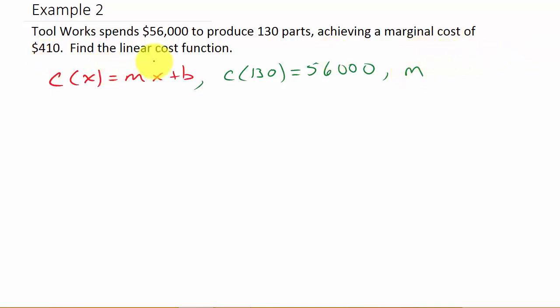Alright, so let's take all of this information and plug it in and see what we get. So I've got C(130) is equal to, m is 410 times x. And what am I doing with the x? I'm replacing x with 130 plus b. They don't tell me what b is, so plus b. And that should equal, once I evaluate it, $56,000.